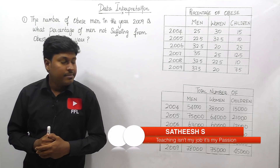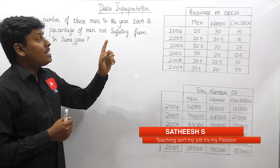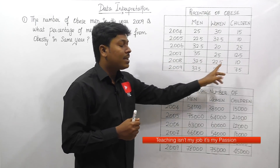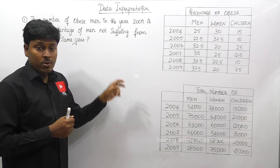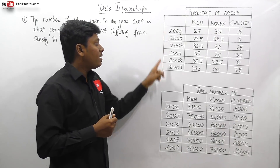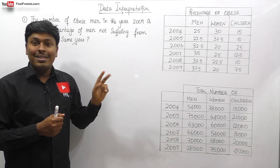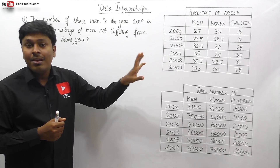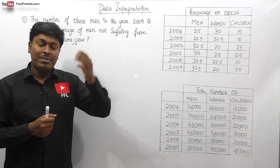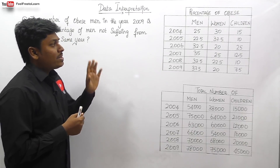Let me move on to DI number eight. Friends, here they have given two table charts. The first table chart shows the percentage of obesity in men, children, and women — all values are given in percentage. The second chart shows the total number of men, women, and children from the year 2004 till 2009. Let me move on to all the various questions based on this chart.